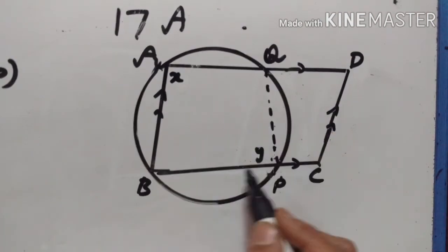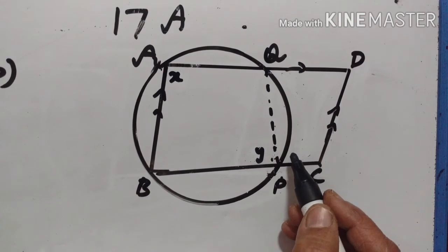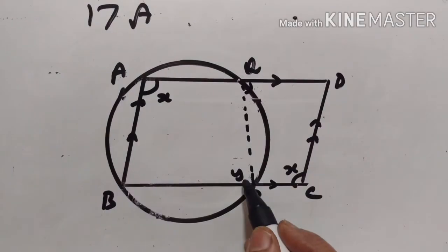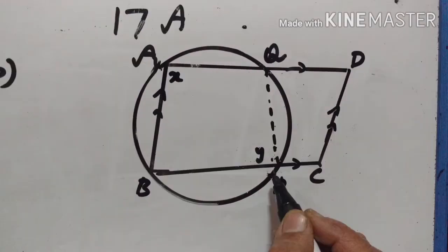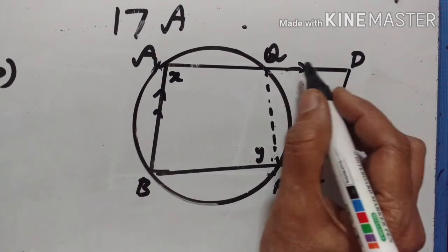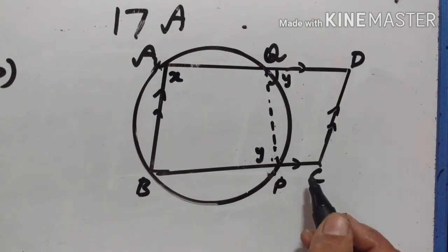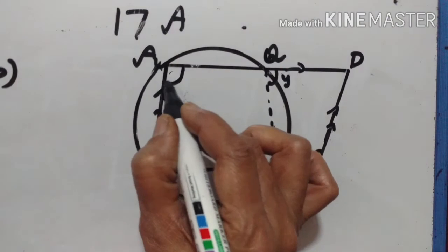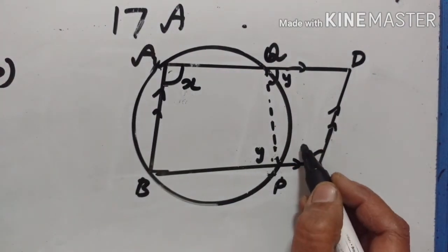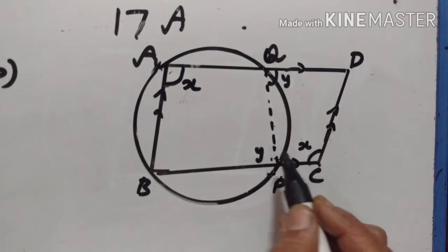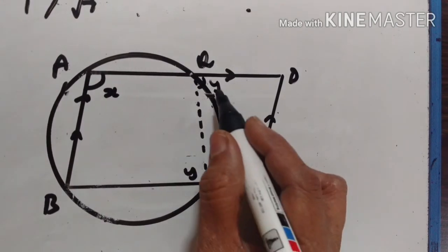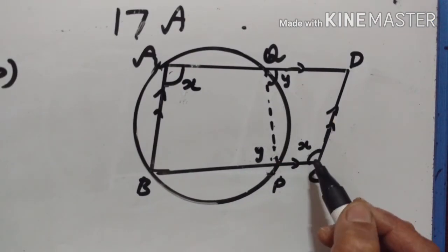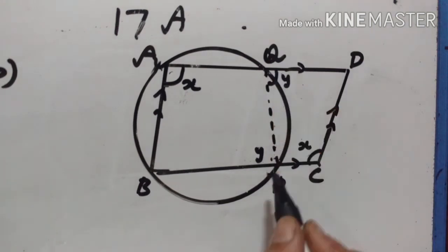Since AD is parallel to BC and QP is the transversal, angle DQP equals angle BPQ — alternate angles are equal. So if angle BPQ is Y, then angle DQP is also Y. ABCD is a parallelogram, so opposite angles are equal; if angle A is X then angle C is also X. X plus Y equals 180, so since opposite angles are supplementary, PCDQ is a cyclic quadrilateral.